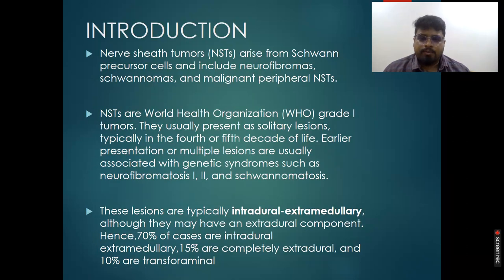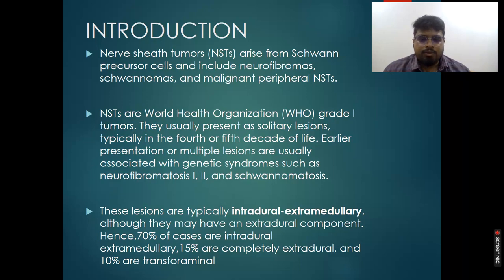Nerve sheath tumors arise from Schwann cell precursors. These include neurofibromas, schwannomas, and malignant peripheral nerve sheath tumors. These are World Health Organization grade 1 tumors. They usually present as isolated lesions, typically in the 4th or 5th decade of life. Earlier presentation and multiple lesions are usually associated with genetic syndromes such as neurofibromatosis 1, 2, and schwannomatosis.